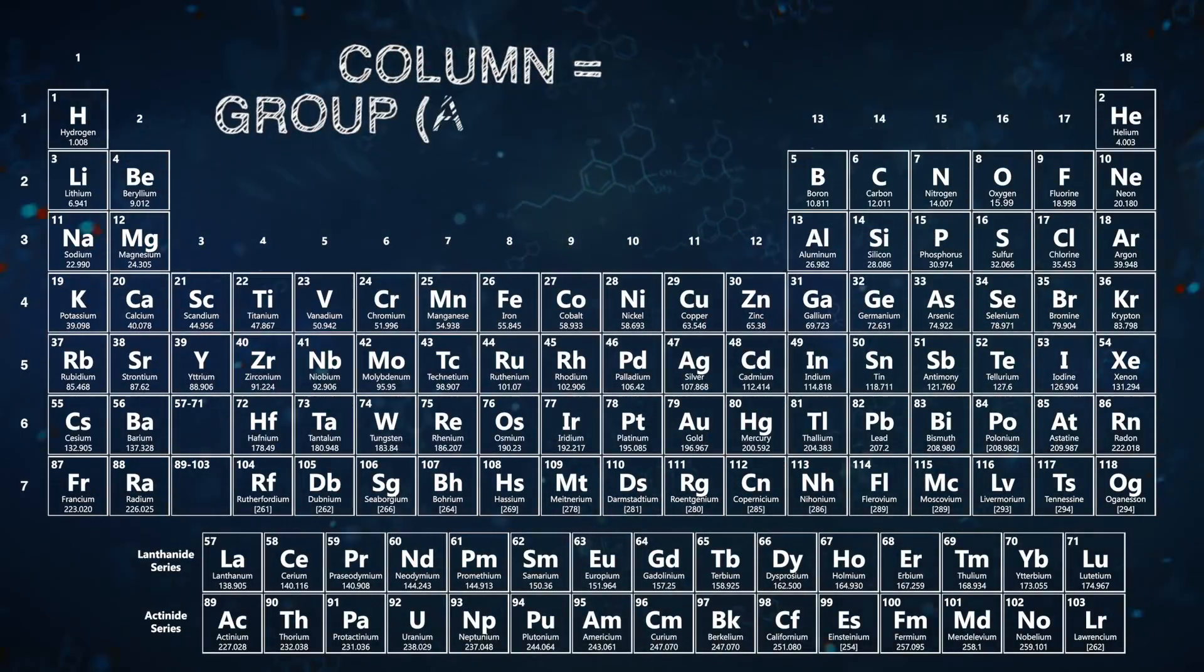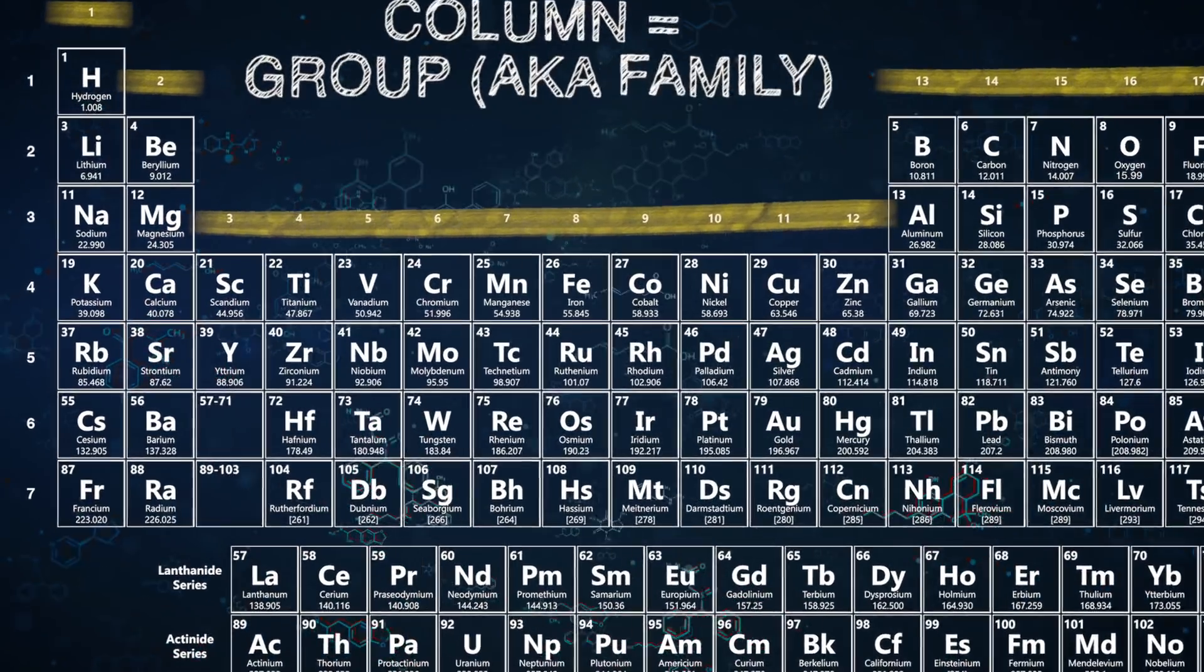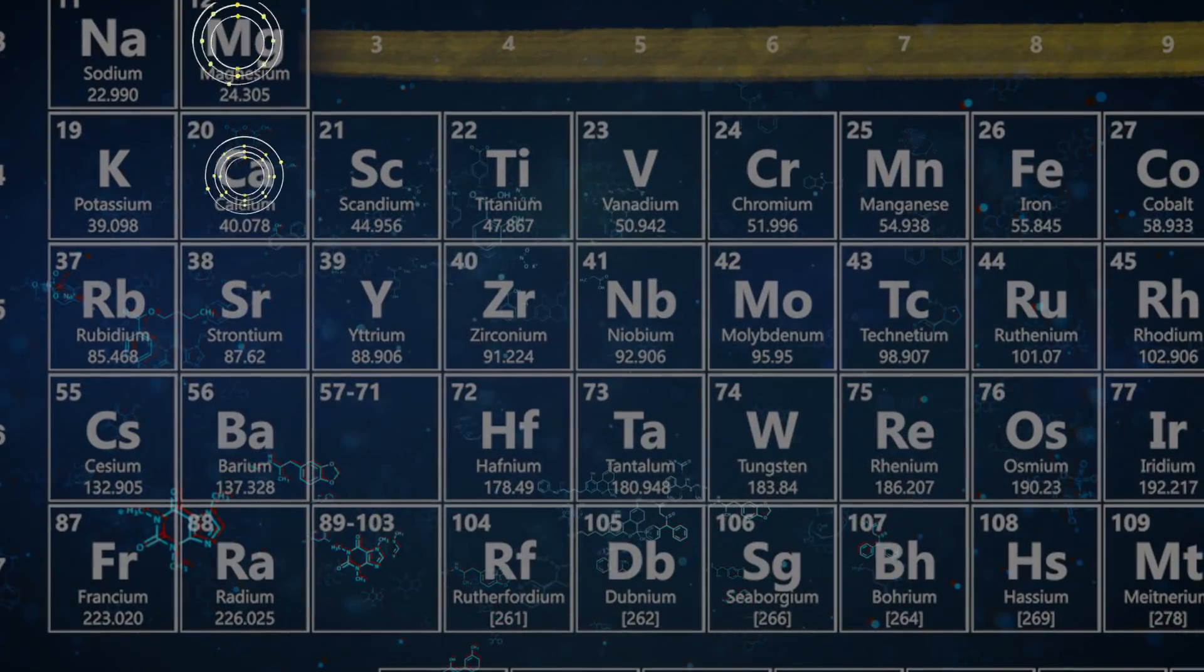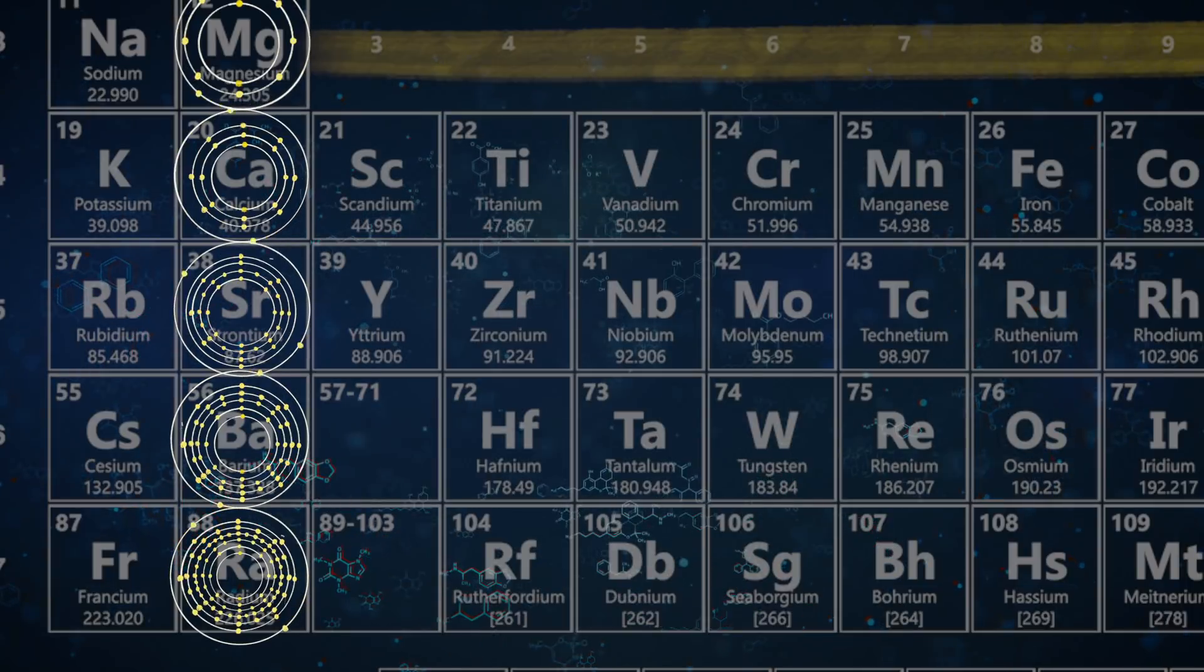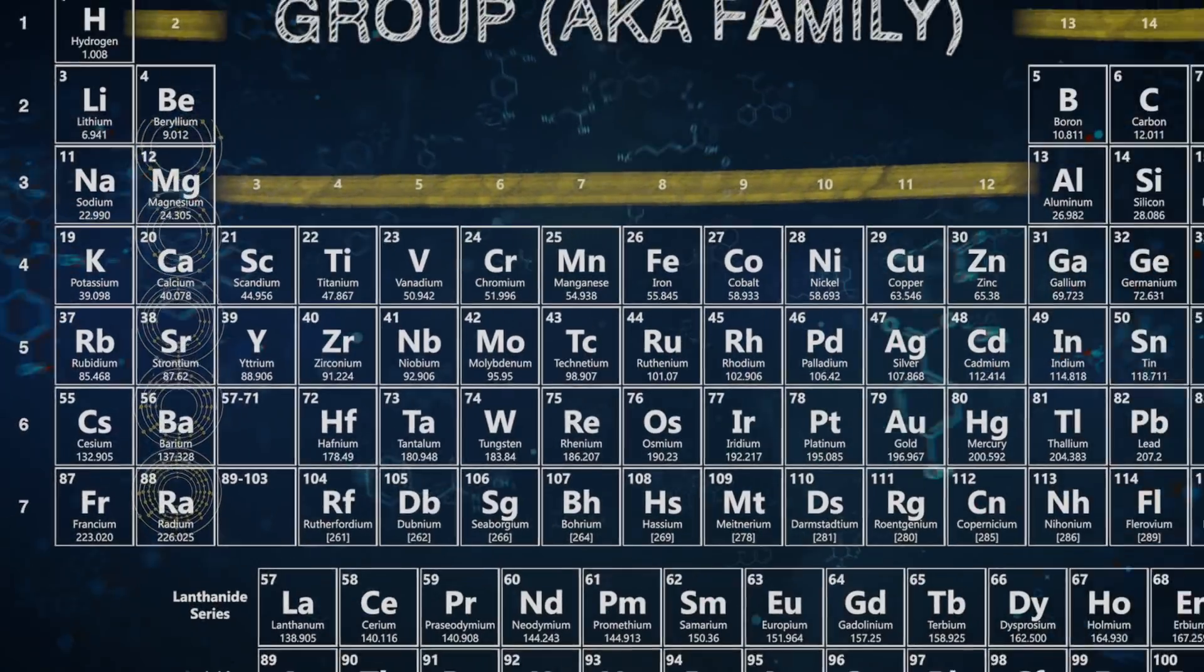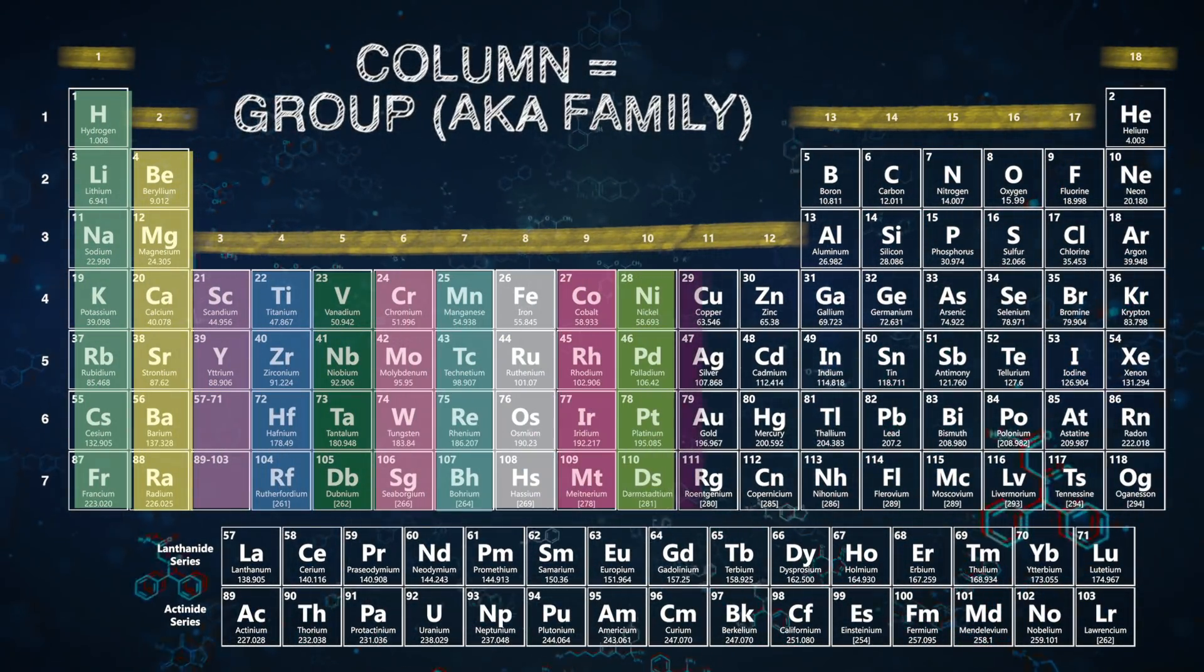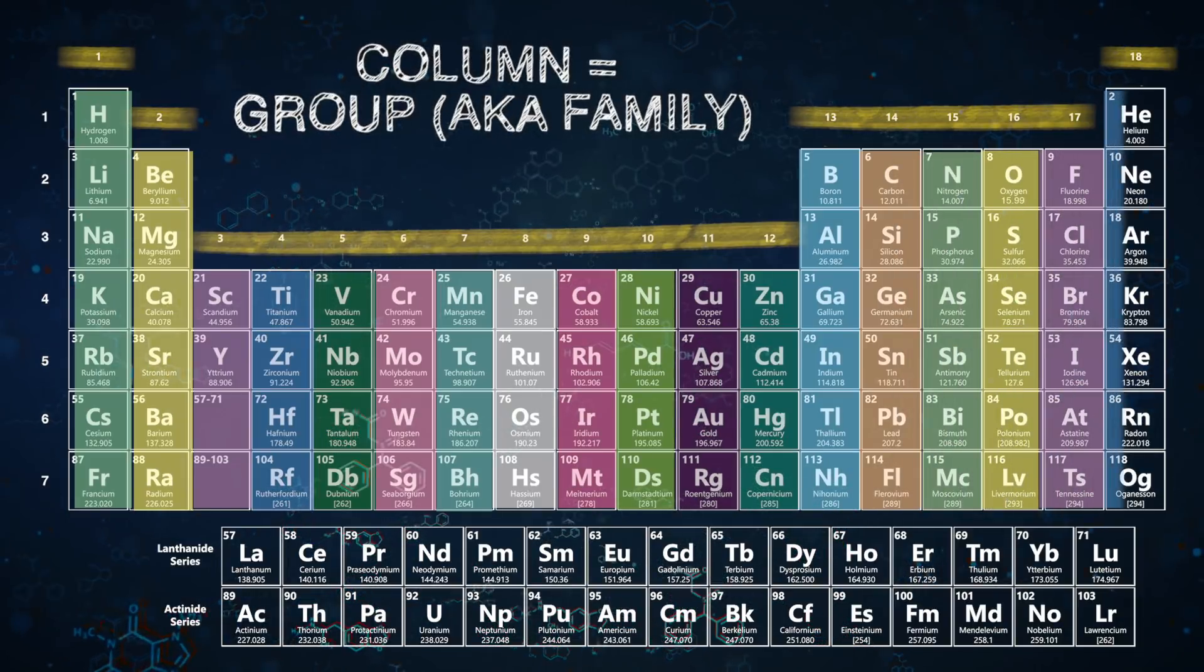Each column on the Periodic Table is called a group, or a family, numbered 1-18, and all the elements in a group have the same number of valence electrons, so they behave very similarly on a chemical level. That means if you know the electron configuration for each group, you can look at the Periodic Table and automatically have a lot of information about how that element behaves based on which group it's in.